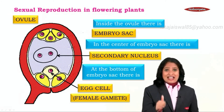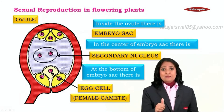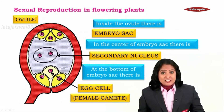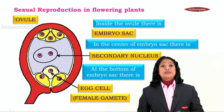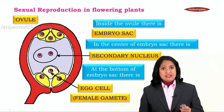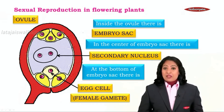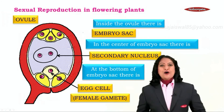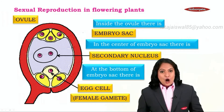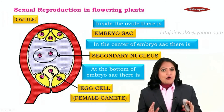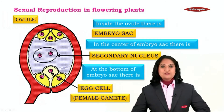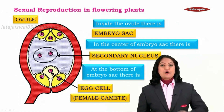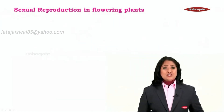So now we know: inside the stamen, pollen grains are produced which will eventually produce the male gametes. And inside the ovule we have our egg cell. Now we know about our two gametes. Let's go further.